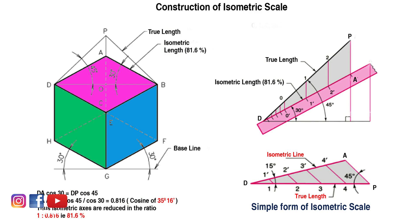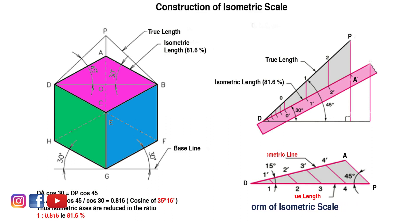Any point on the true length line can be converted to isometric length by drawing a line parallel to PA. Even though it is easy to calculate isometric length using a calculator by multiplying by 0.816, it is customary to show an isometric scale in the isometric projection diagram. So even when calculating with a calculator, you must draw an isometric scale near the projection.